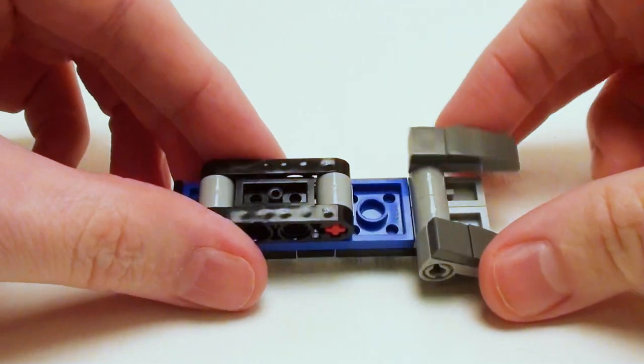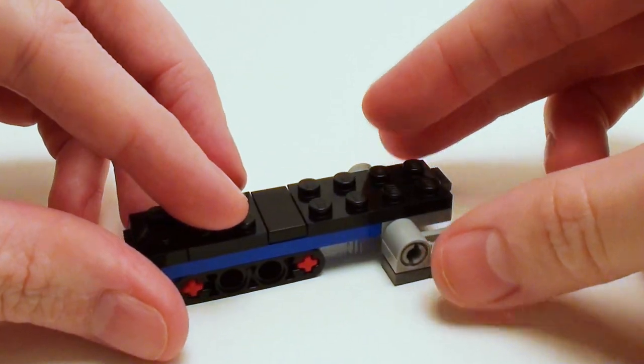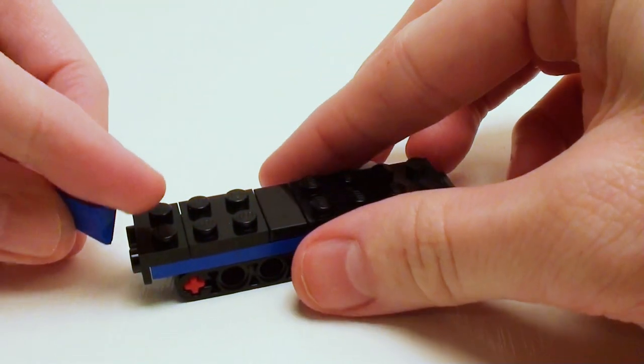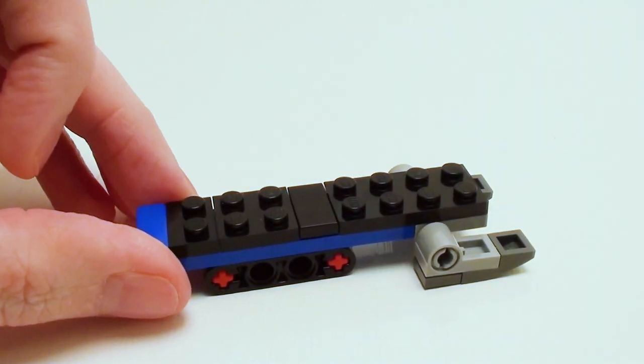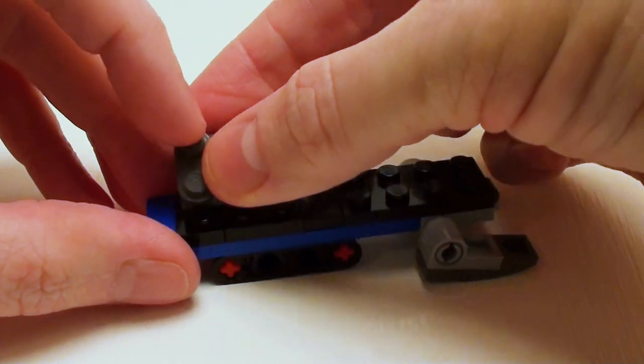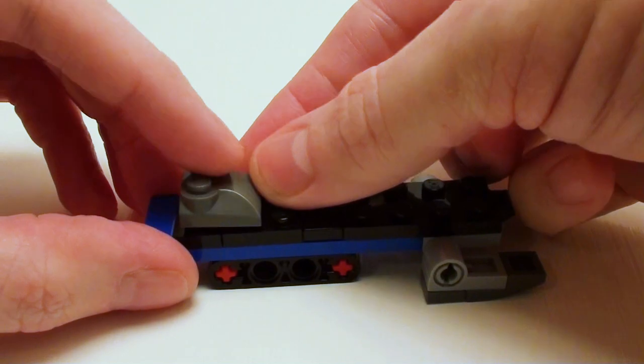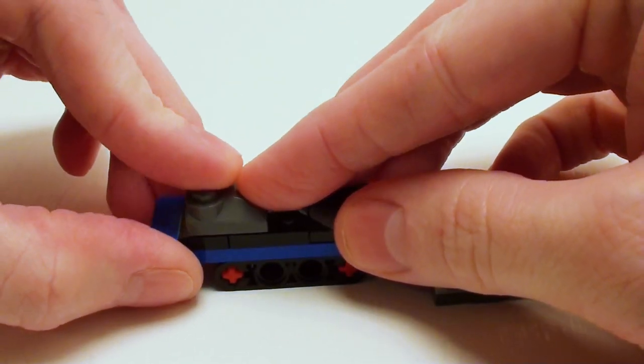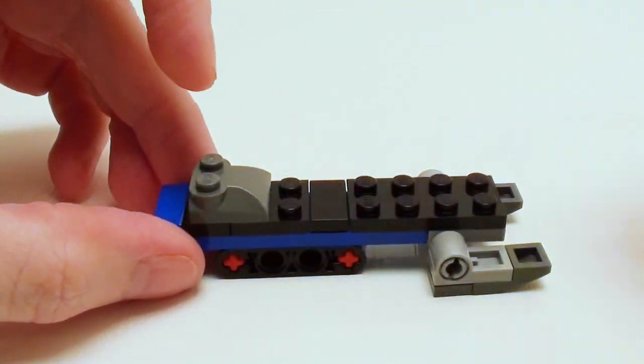Flip the assembly over. Place a 1 by 2 slope on the rear and a telephone base on the back—this is a 2 by 2 modified plate with two studs on top.